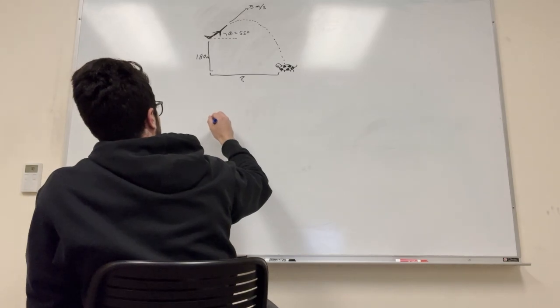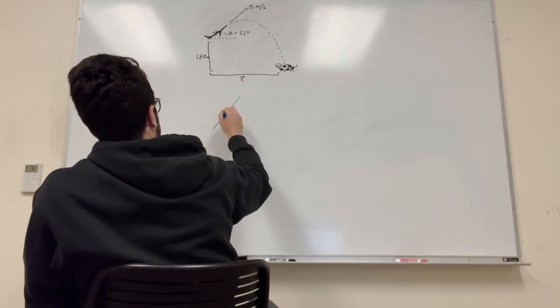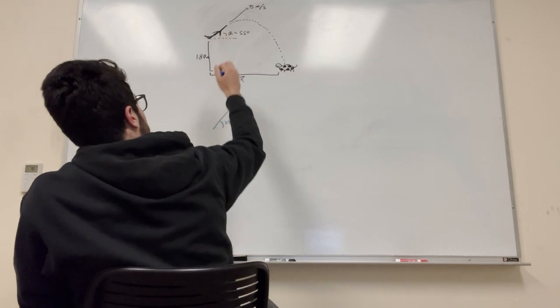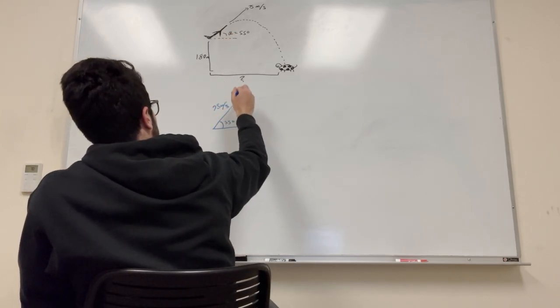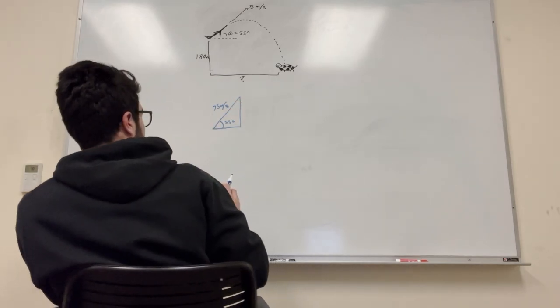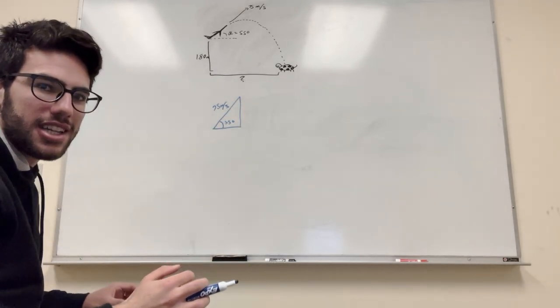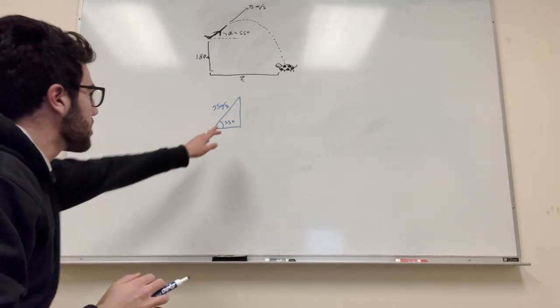Okay, so let's look at our plane. So our plane is going this direction. This is 55 degrees, right? And it's going 75 meters per second. So we can set up a triangle now, like this. Boom. And using SOHCAHTOA, sine cosine tangent, we can find out what these two angles are.